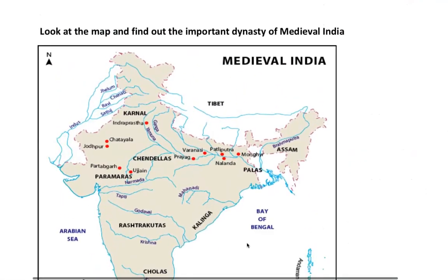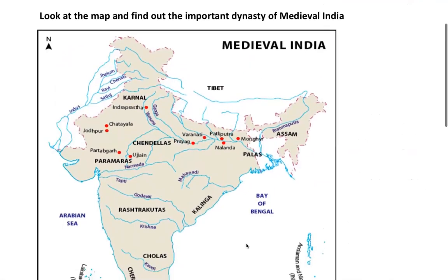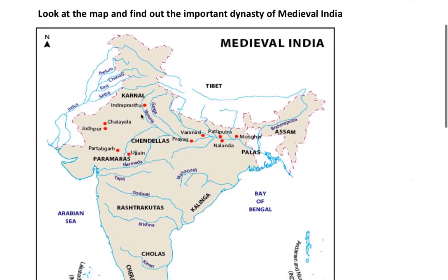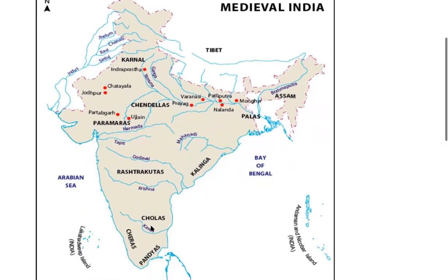These are the important dynasties of medieval India. You can see the Chandelas in central India near Uttar Pradesh, the Parmaras, the Rashtrakutas in the Deccan — very powerful rulers — Kalinga near Orissa, Palas near West Bengal, and the Cholas coming down to the Deccan plateau and southern India, along with the Cheras and Pandyas. These were the key dynasties which flourished during the medieval period in the Indian subcontinent.